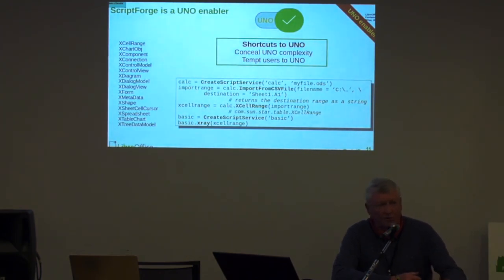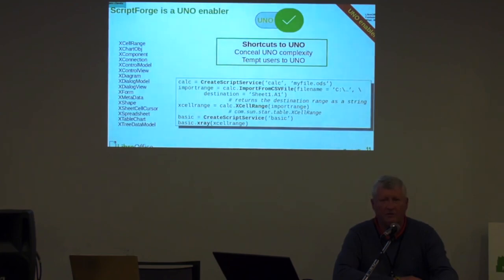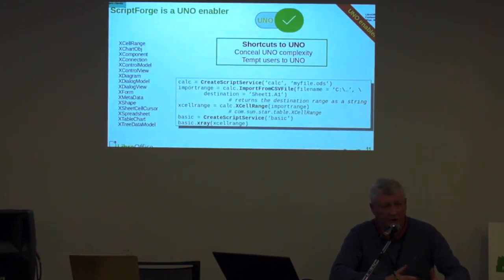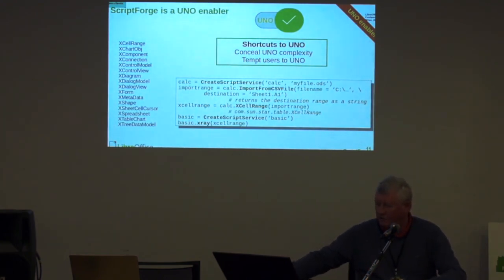Well, you can, via shortcut, go very fast to your target — here, the cell range — and from there, start. For instance, by using X-Ray in Python or BASIC, whatever, and starting from there, going further, and use really methods or properties from UNO objects. So you have a huge list. You have a sample here of a number of things that are available via shortcuts. And it's very important to understand that both work well together.